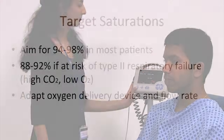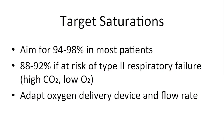For most patients, when delivering oxygen therapy, we aim for a target saturation of between 94 and 98%. However, if a patient is thought to be at risk of type 2 respiratory failure — for example, those with COPD — we aim for a lower target saturation of between 88 and 92% whilst awaiting the results of an arterial blood gas, or ABG. The oxygen delivery device and flow rate can be changed to keep the SpO2 within this target range.